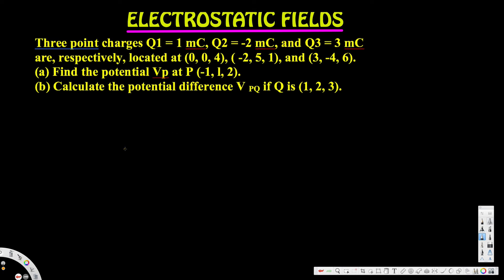Let's look at this problem. Three point charges: q1 = 1 millicoulomb, q2 = -2 millicoulomb, and q3 = 3 millicoulomb, located respectively at (0, 0, 4), (-2, 5, 1), and (3, -4, 6). Part A asks to find the potential VP at point P(-1, 1, 2), and Part B asks to calculate the potential difference VPQ if Q is at (1, 2, 3).